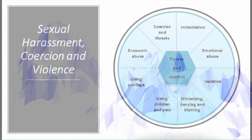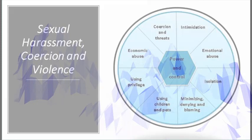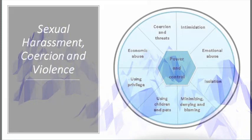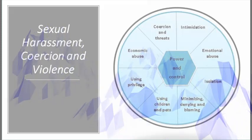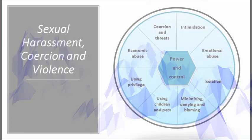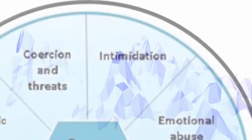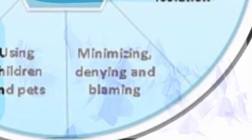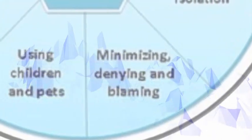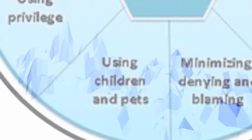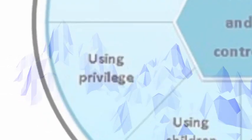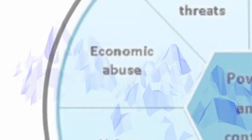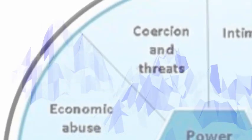In this lesson we will be discussing sexual harassment, coercion, and violence. Sexual harassment, coercion, and violence can take many different forms: intimidation, emotional abuse, isolation, blaming, minimizing or denying one's rights or personal space, using children or pets against one, using privileges, economic abuse, coercion, and other types of threats.